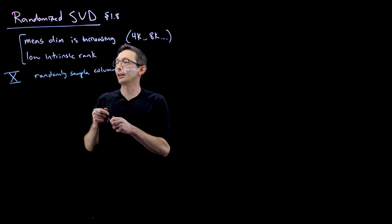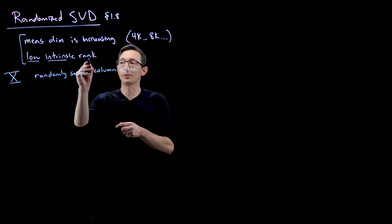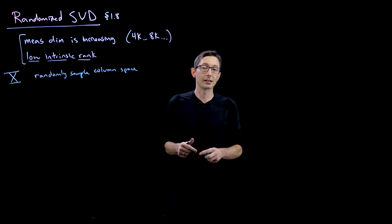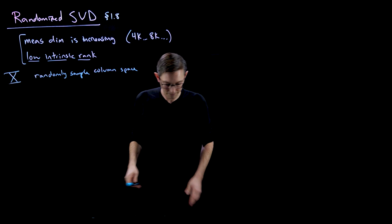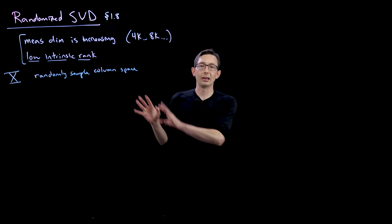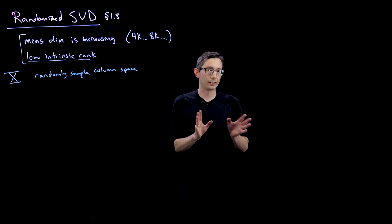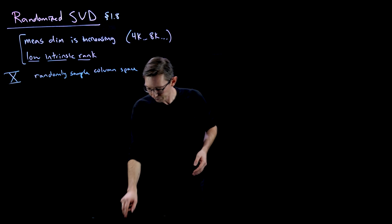So the key assumption is that there is in fact a low intrinsic rank. There is structure in the matrix that I want to uncover, even if it's very, very, very high dimensional. And I'm going to walk through this both in math and in pictures. I think that'll be pretty helpful.